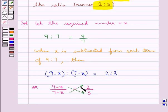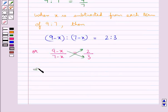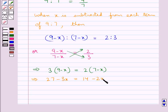We cross multiply. This gives us 3 into 9 minus x is equal to 2 into 7 minus x. This means 27 minus 3x is equal to 14 minus 2x.